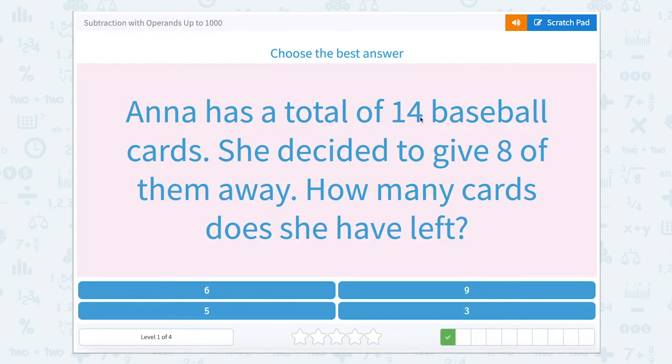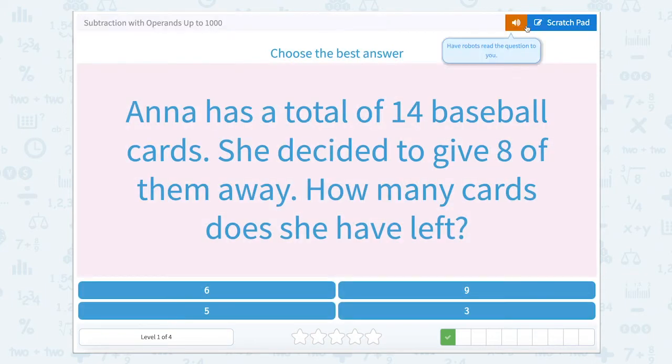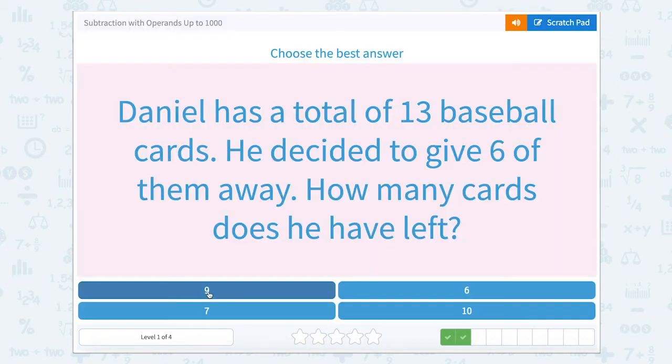Anna has a total of 14 baseball cards. She decided to give eight of them away. How many cards does she have left? Anna started with 14 baseball cards and she decided to give eight of them away. So if she's giving eight away, we do 14 minus eight. 14 minus eight is six. So let's see if we can find six. Correct. Nice work.